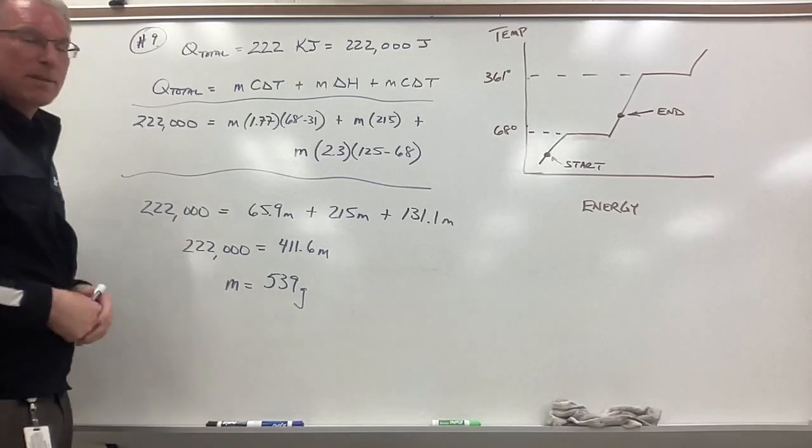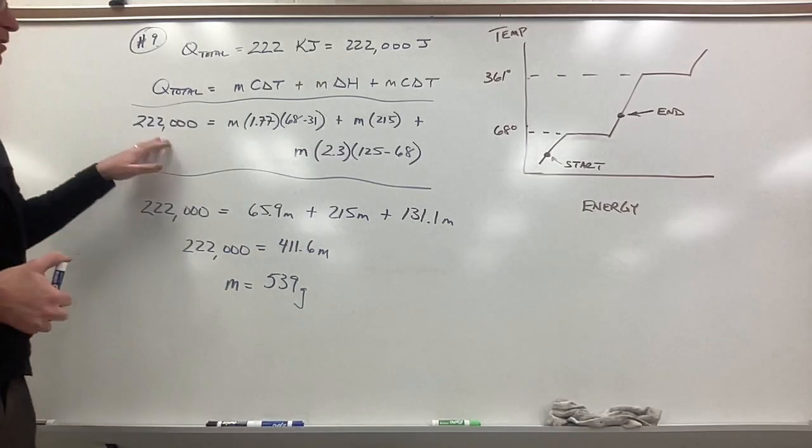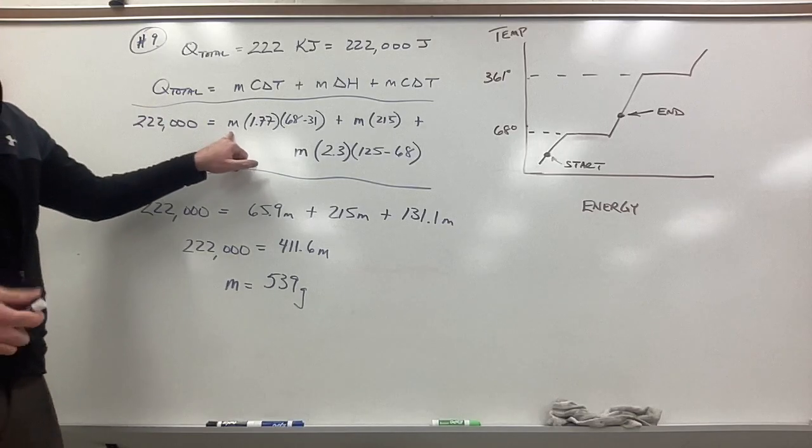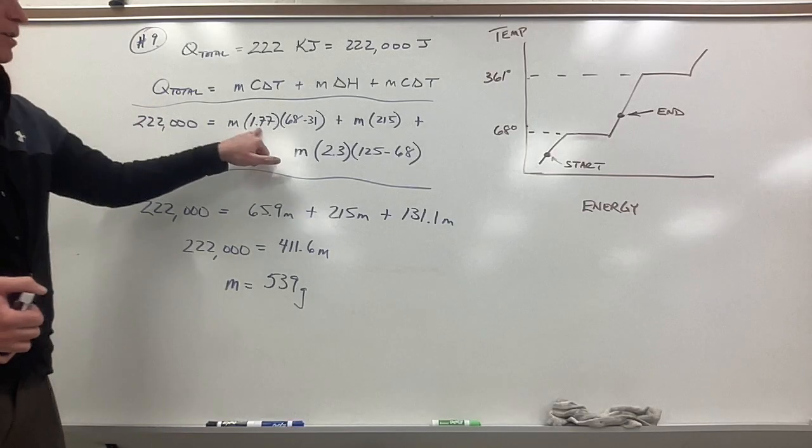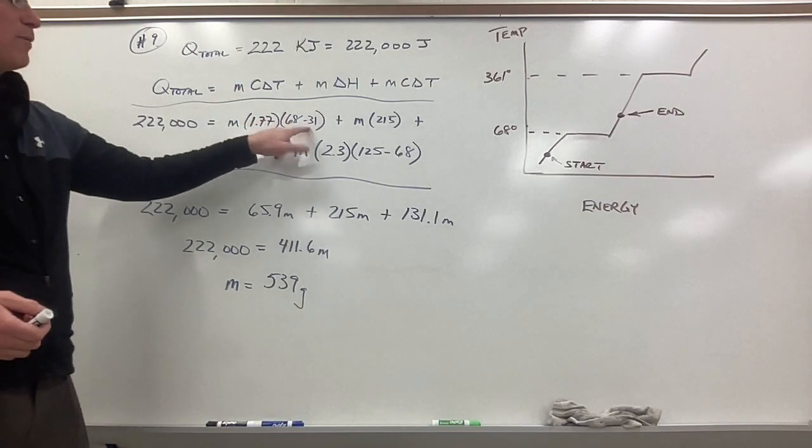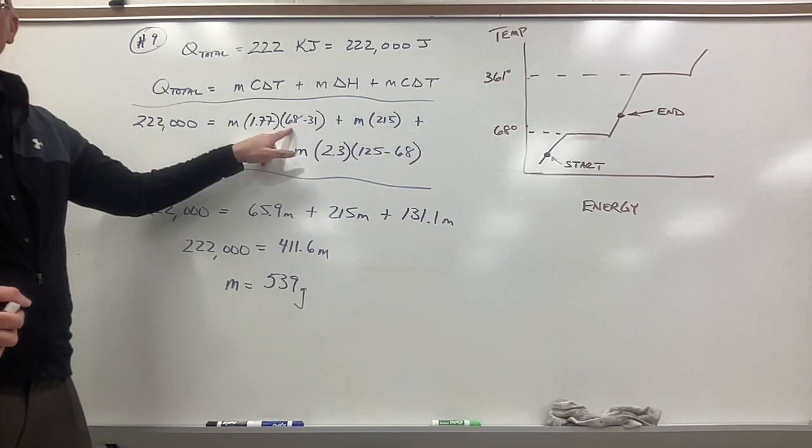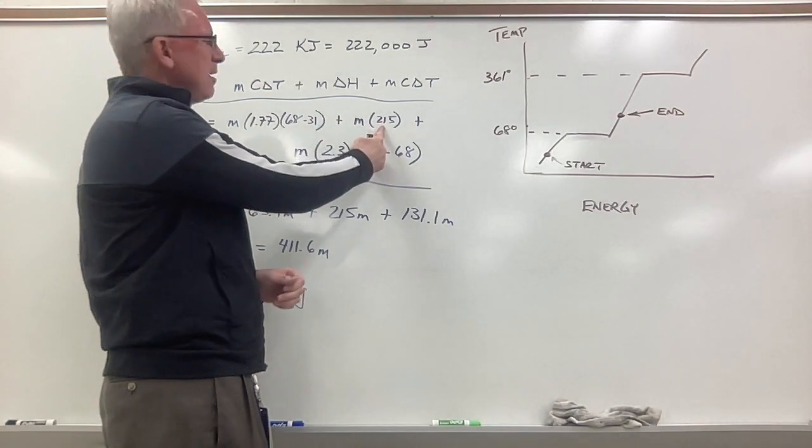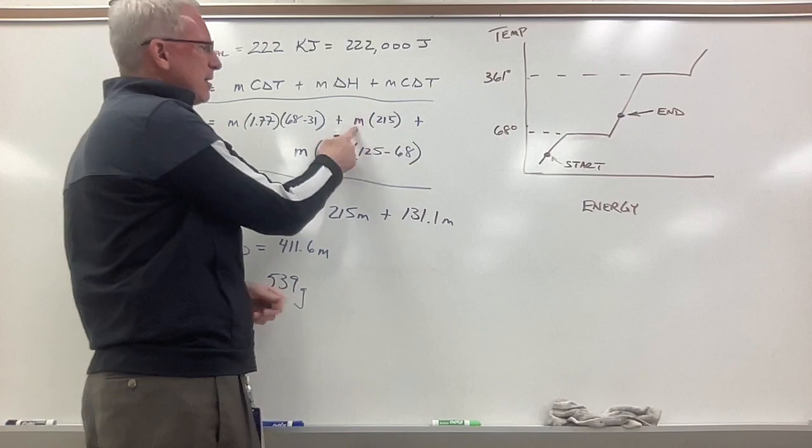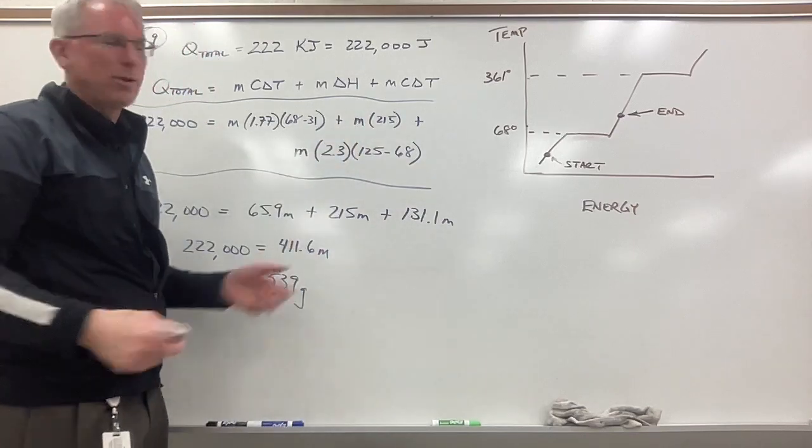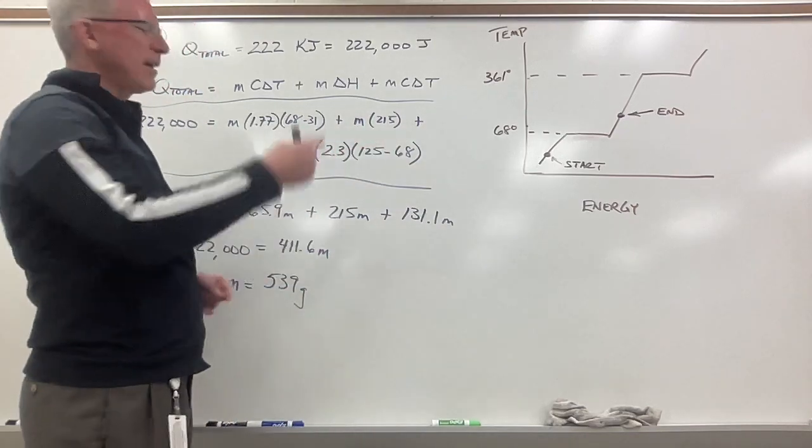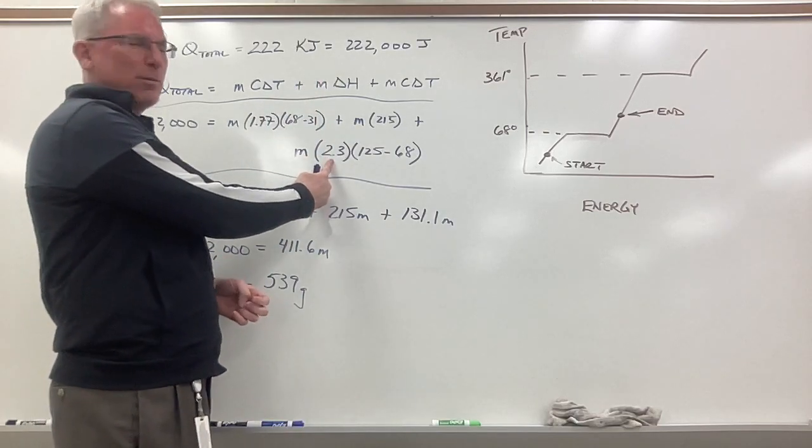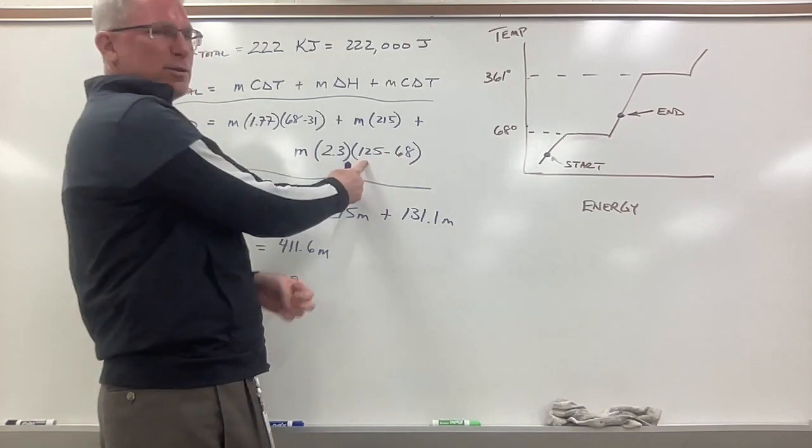So we have three steps and we start plugging in some numbers. We have our total energy. The mass we don't know, so I'm just gonna call it M. I can look up my constant for C and I know that I'm going from 31 to 68 degrees. I know that I have to melt the wax, so I look up my delta H of fusion and that's 215. Still don't know my mass because that's what we're trying to find. And then we have to heat up the wax, unknown mass M, times our C for liquid wax, and I'm gonna go from 68 to 125.